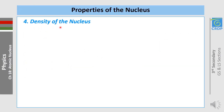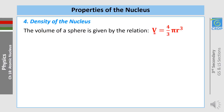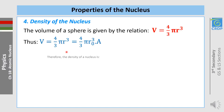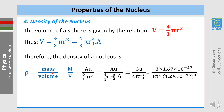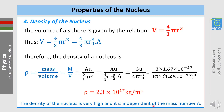Let's move to the density of the nucleus. The volume of a sphere is V = (4/3)πR³, and since R = R₀ × A^(1/3), we can write V = (4/3)πR₀³ × A. The density is ρ = mass/volume = AU / [(4/3)πR₀³ × A], which simplifies to ρ = 3U / (4πR₀³) ≈ 2.3 × 10¹⁷ kg/m³. This density is very high and is independent of the mass number A.